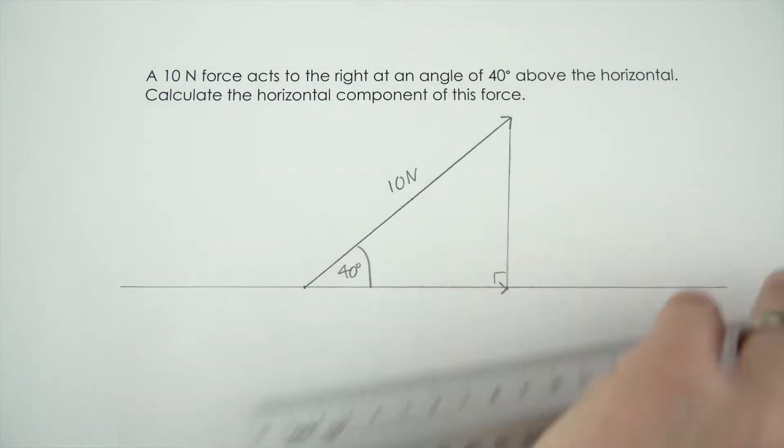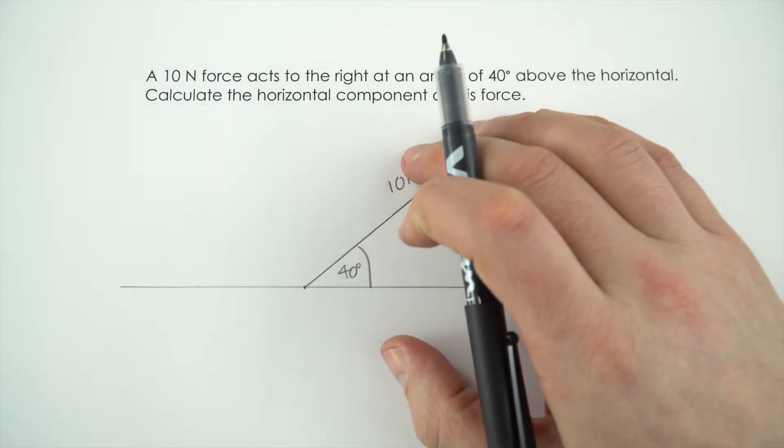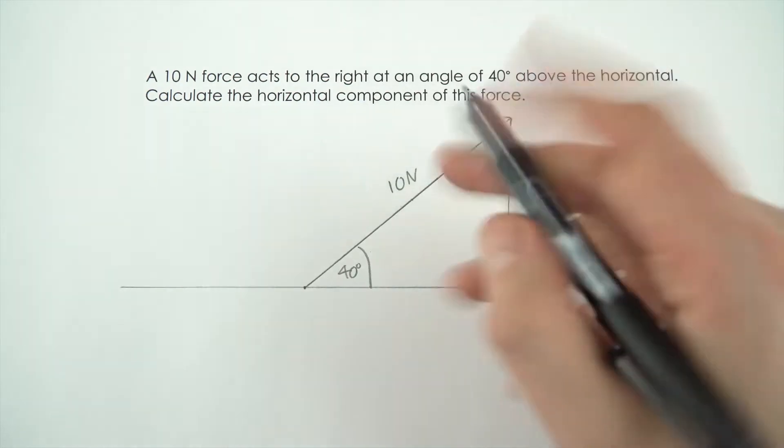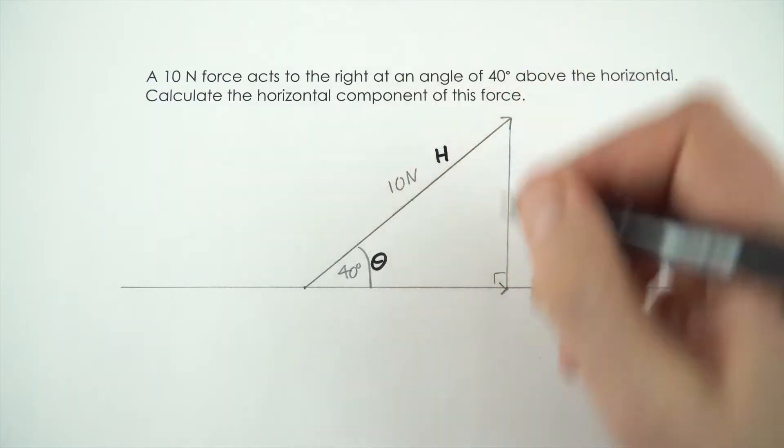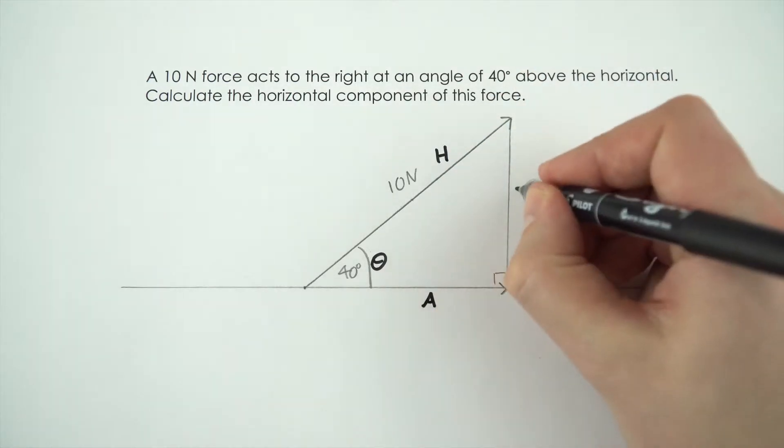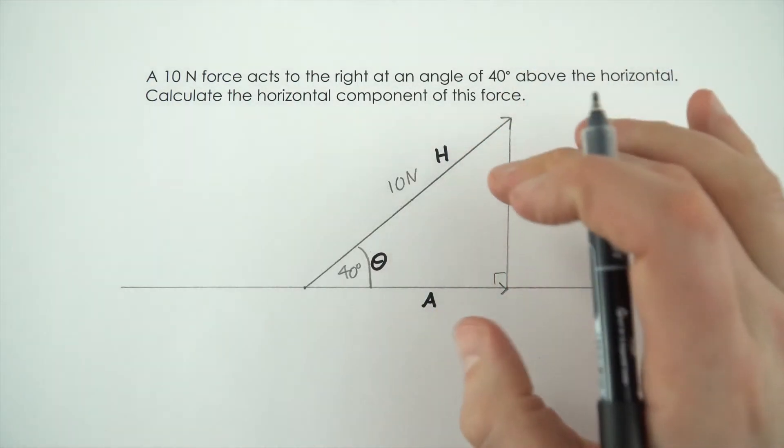Now the first step I'm going to do is label on this triangle the things I know. So this is my angle theta in here, the longest side is my hypotenuse, this is the adjacent side and that's the opposite side. It's always worth doing that at the start.